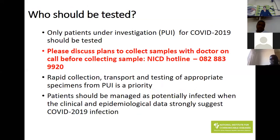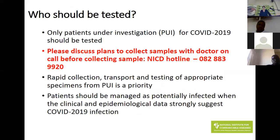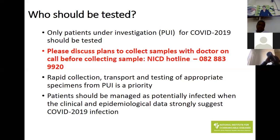We should only test persons under investigation — not the general community with flu-like illness unless they have risk factors. If testing is indicated, collect the specimen rapidly and transport it. Private sector labs have systems to get samples to us. Public sector labs — all NHLS laboratories throughout South Africa — will get samples to the NICD. Manage the patient as potentially infected until results are returned. If mild, send them home to self-isolate; if severe, admit them and manage as a potential case until we have results.